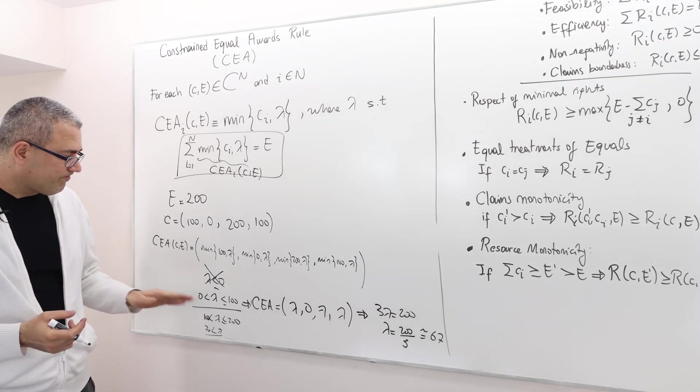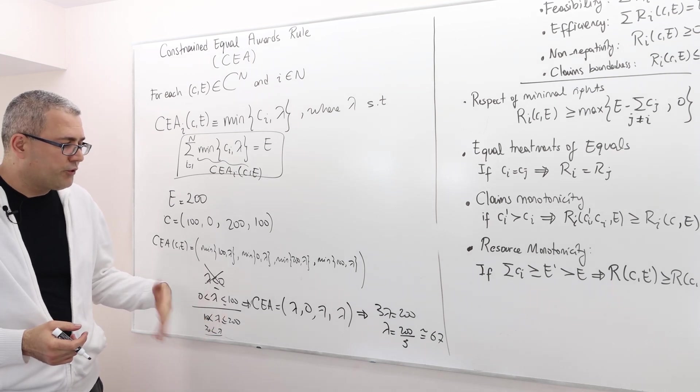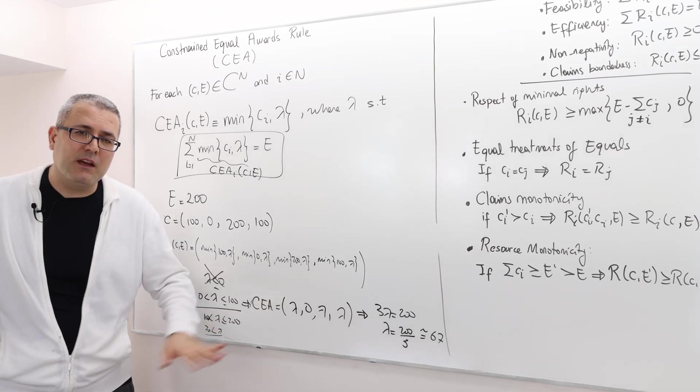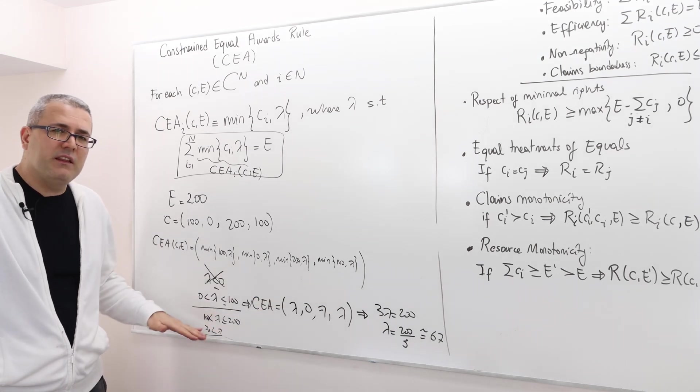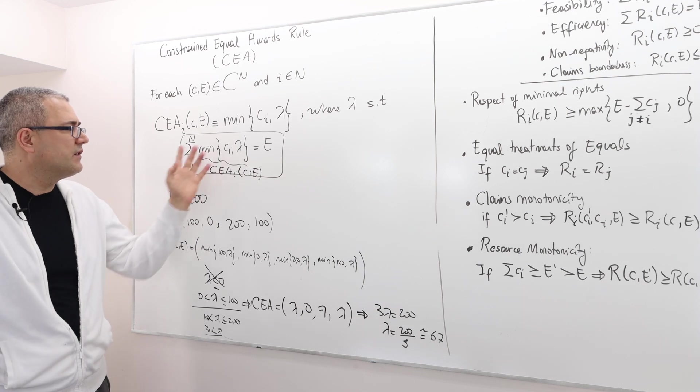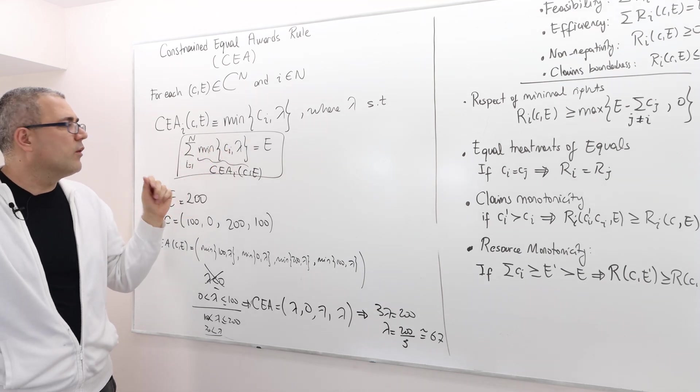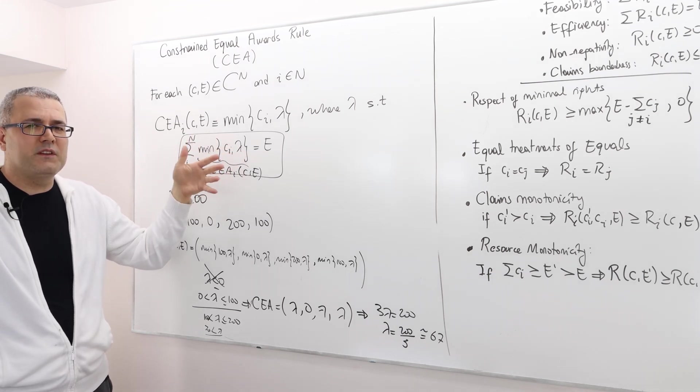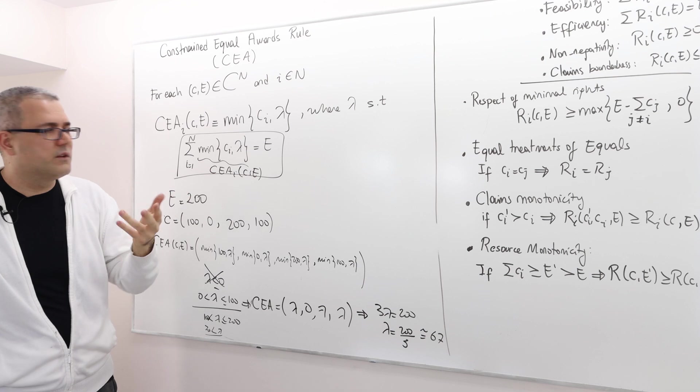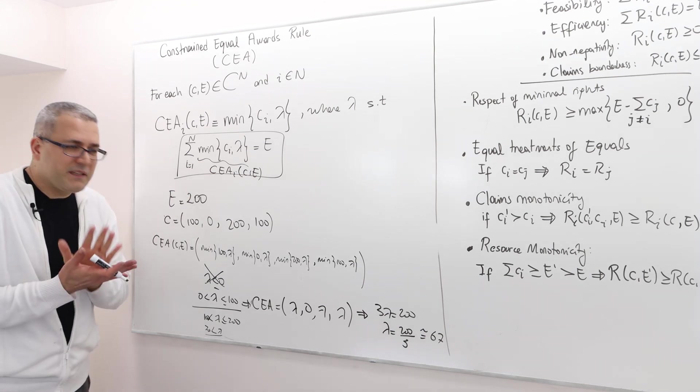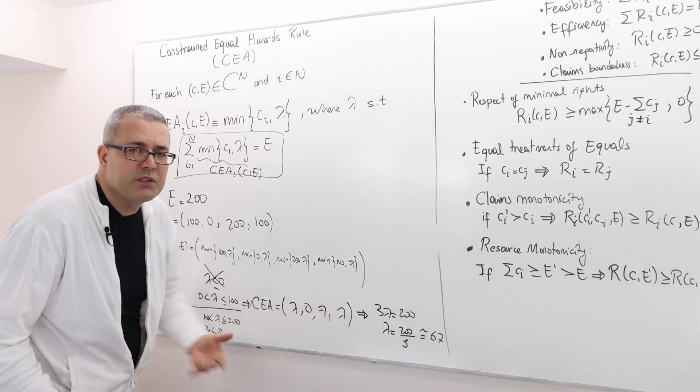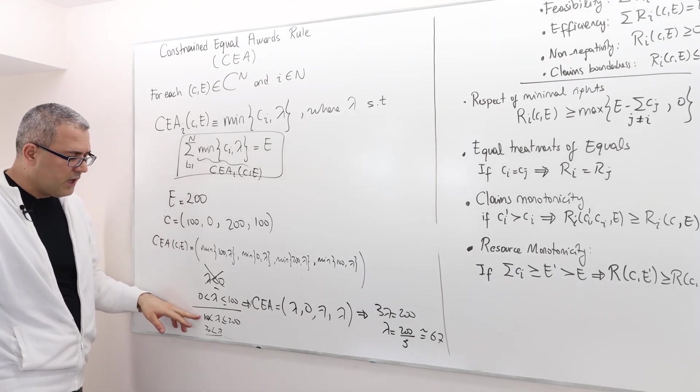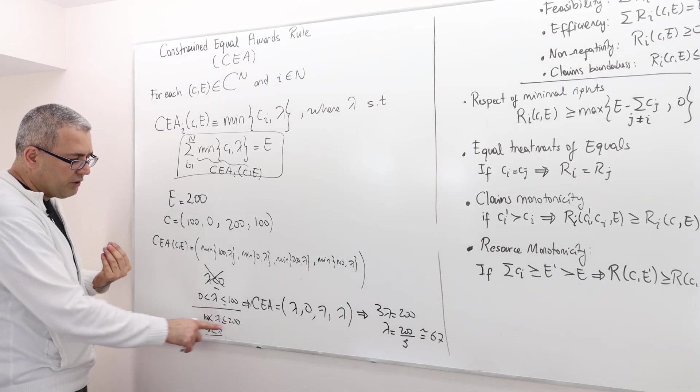You may wonder, should I keep continuing looking at those cases? No. Once you find lambda, you don't really need to look at the other cases because there is going to be only one lambda satisfying this property. Why is that? Because this is a sort of linear optimization problem, and so the solution is going to be unique. But if you're not 100% sure about what you're doing here, you can check the other scenarios. For example, check the scenario where lambda is between 100 and 200.